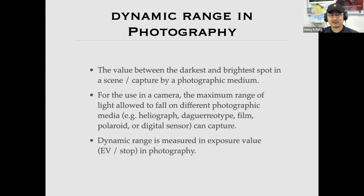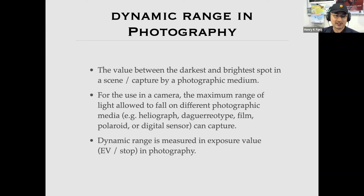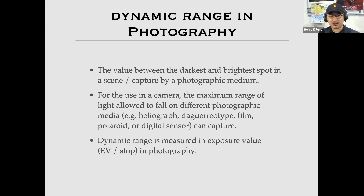Dynamic range refers to what is captured by a photographic medium — the maximum range of light allowed to fall on different photographic media, for example heliograph, daguerreotype, film, Polaroid, or digital sensor. Whatever that medium can capture, and each medium would be slightly different.